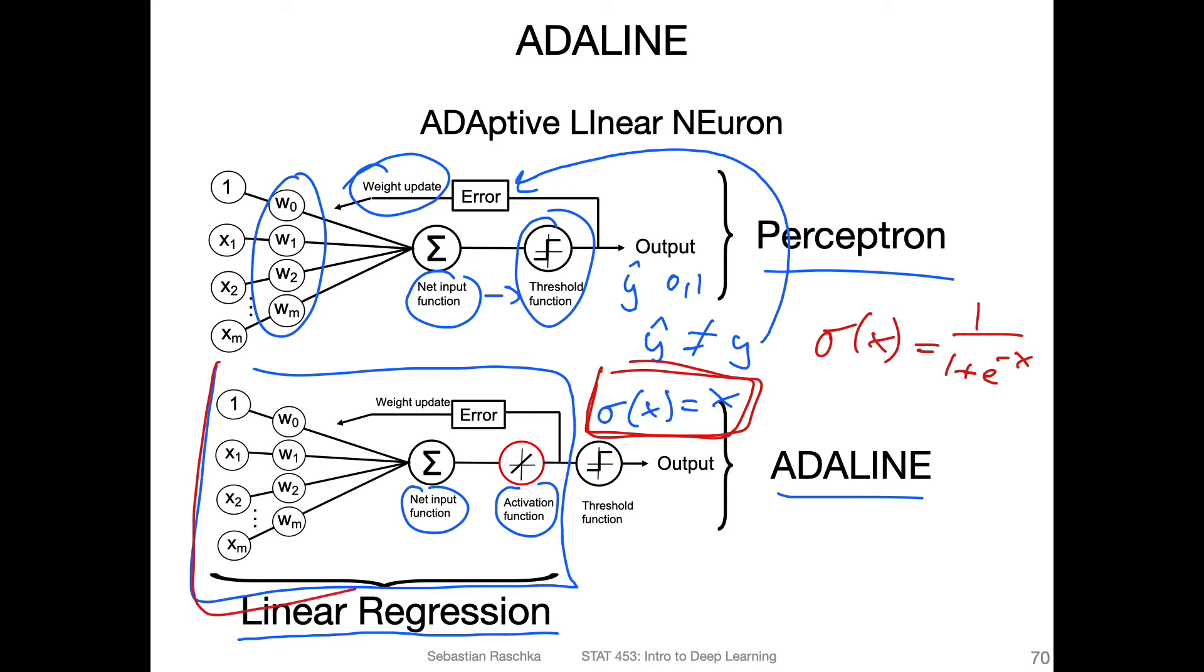Now consider this linear regression base. In order to turn this linear regression model into an adaptive linear neuron, into the ADALINE model, all we have to do is add a threshold function, because the ADALINE model is a classifier for classifying data points similar to the perceptron.